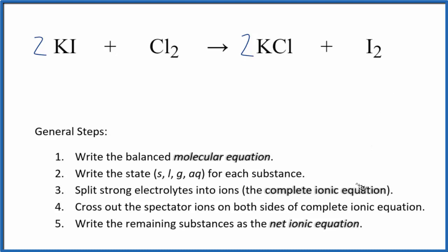Next, we write the states for each substance. Potassium compounds are very soluble. We're going to write a little aq after that because that will be dissolved in water. And then chlorine Cl₂, that's a gas. So we have our chlorine gas.